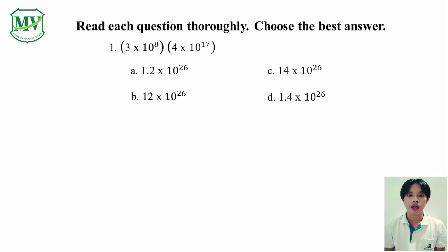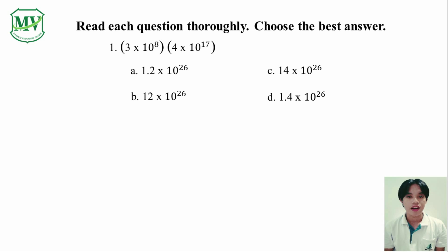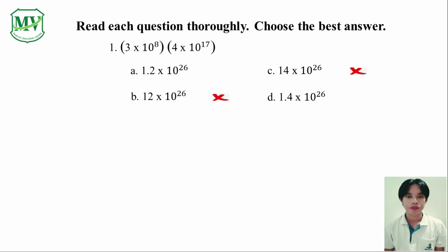Which letter is the correct answer? Let's try to eliminate first the choices that are obviously wrong. Looking at the choices, we can easily tell that the exponential notations in letter B and C are not written in the general format of A times 10 to the power of N, where A is a number greater than 1 but strictly less than 10, or a number between 1 and 9.99. Both letter B and C contain coefficients greater than 10, thus making them wrong. We are left with letter A and D.